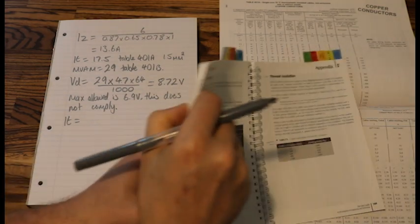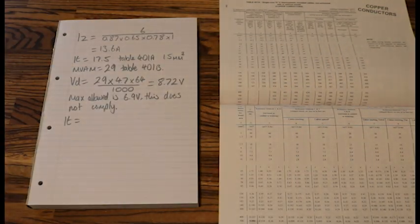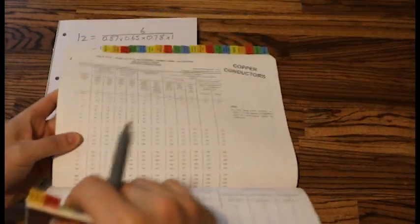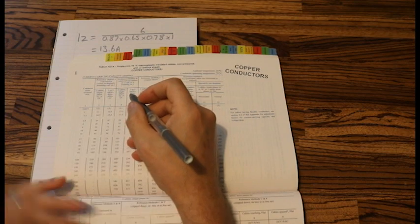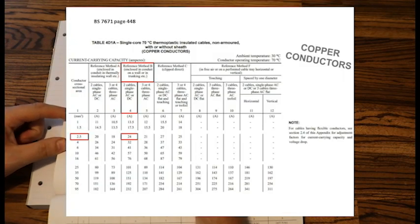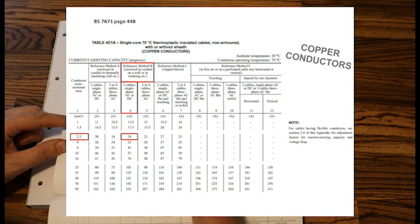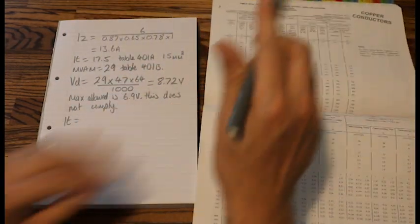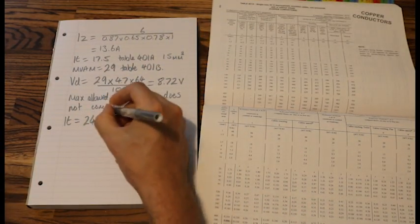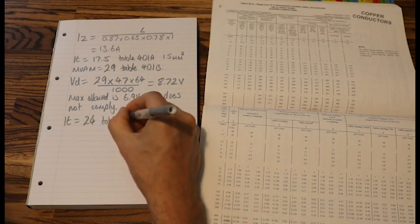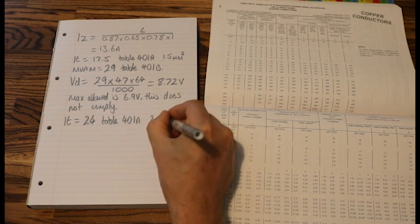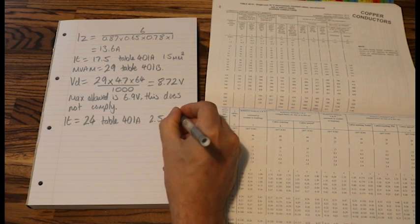So we go back to our IT. So we go back to our IT table, let's move the on-side down the way now. We go back to our IT table, and we go to the next cable up. So we were at 1.5 mil cable, so the next cable is 2.5, and my IT becomes 24. So we'll just jot that down, IT is 24, reference to table still 4D1A, 2.5mm cable.